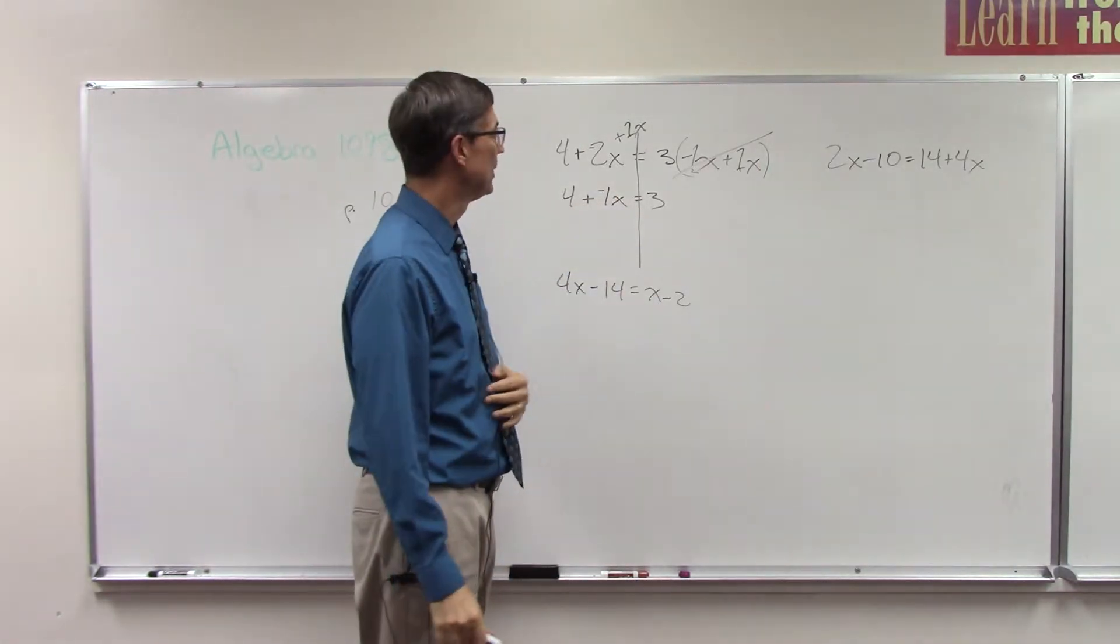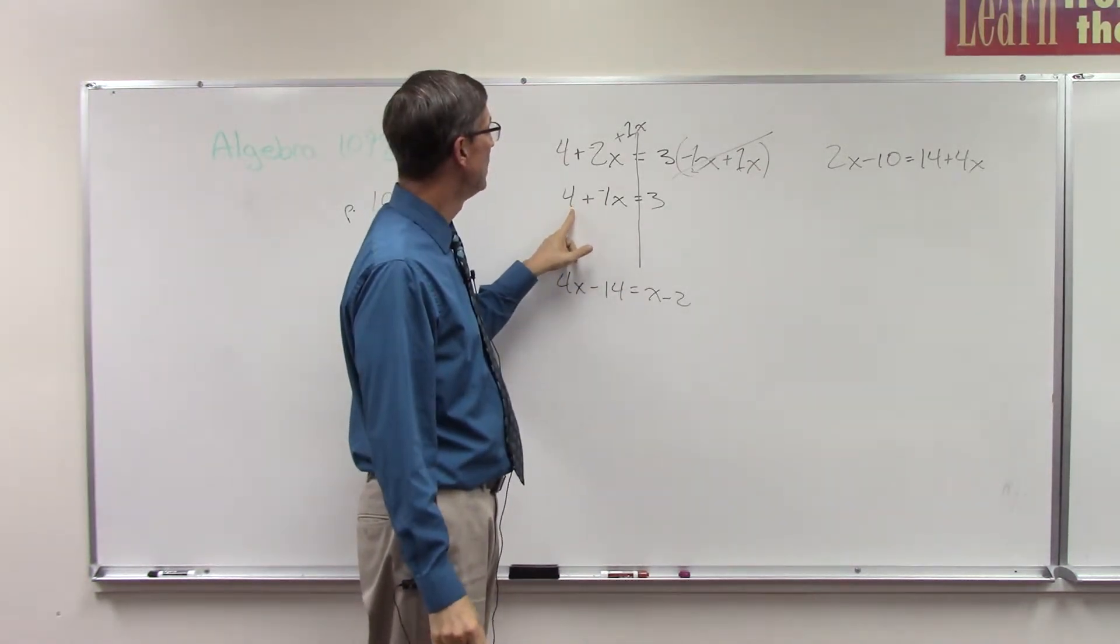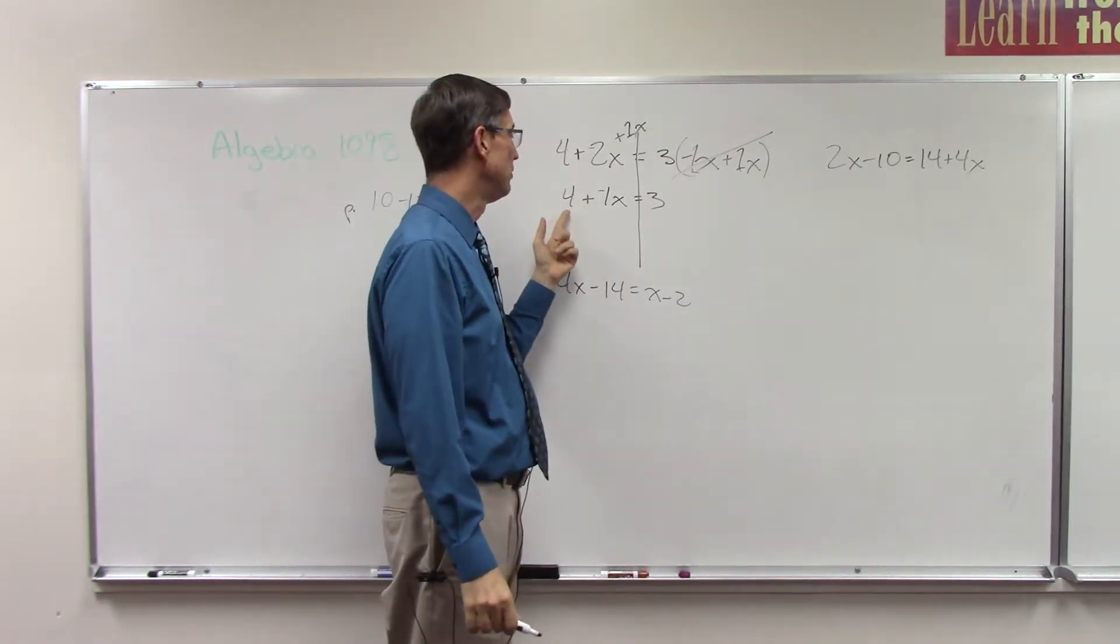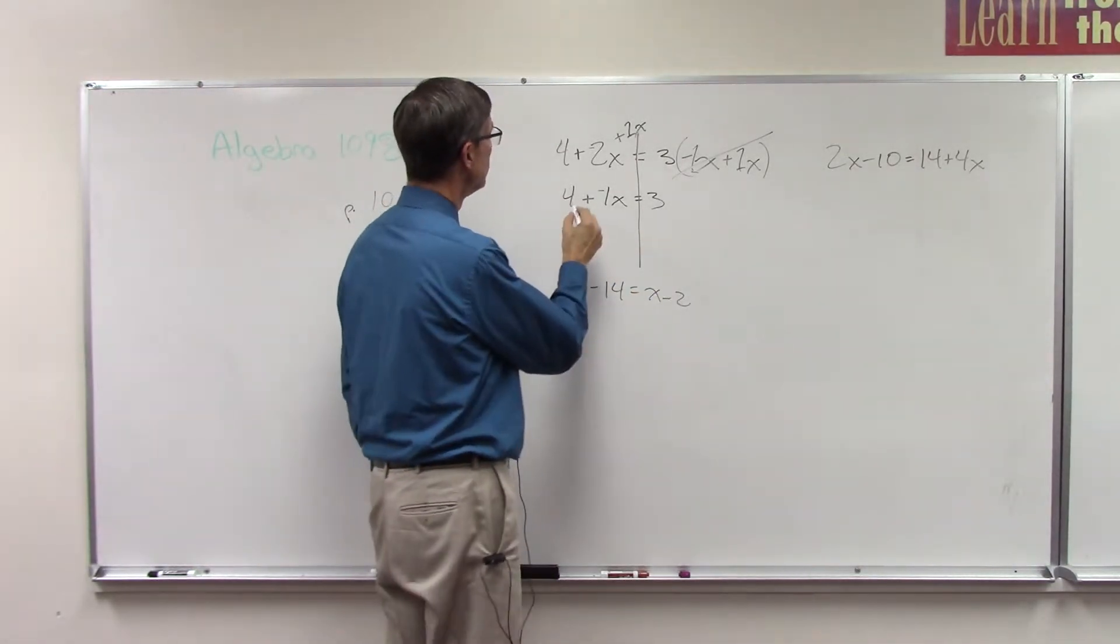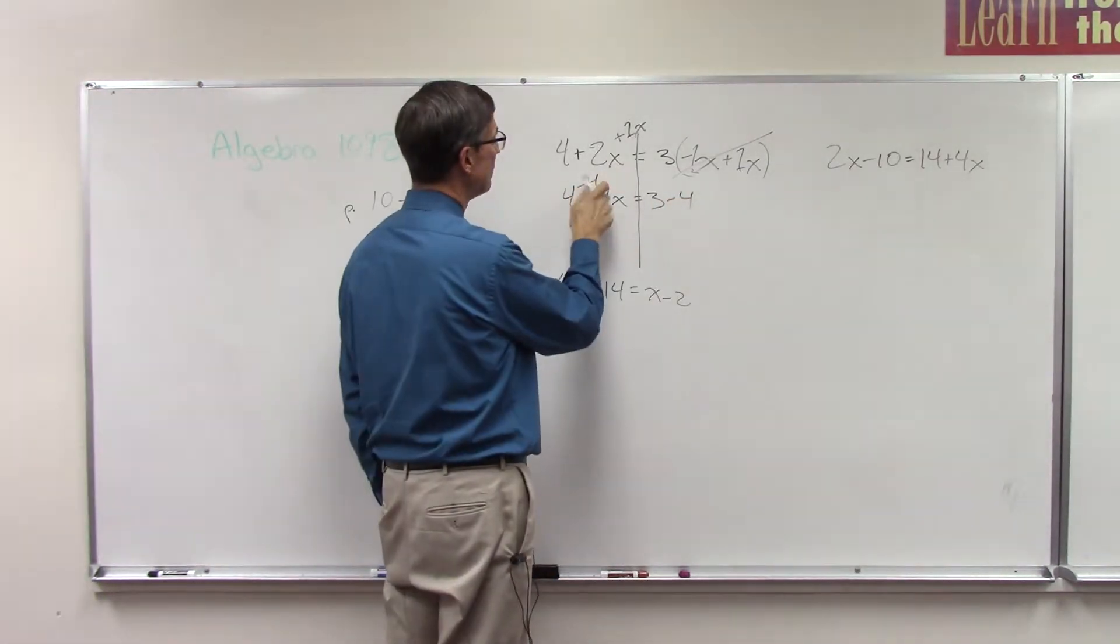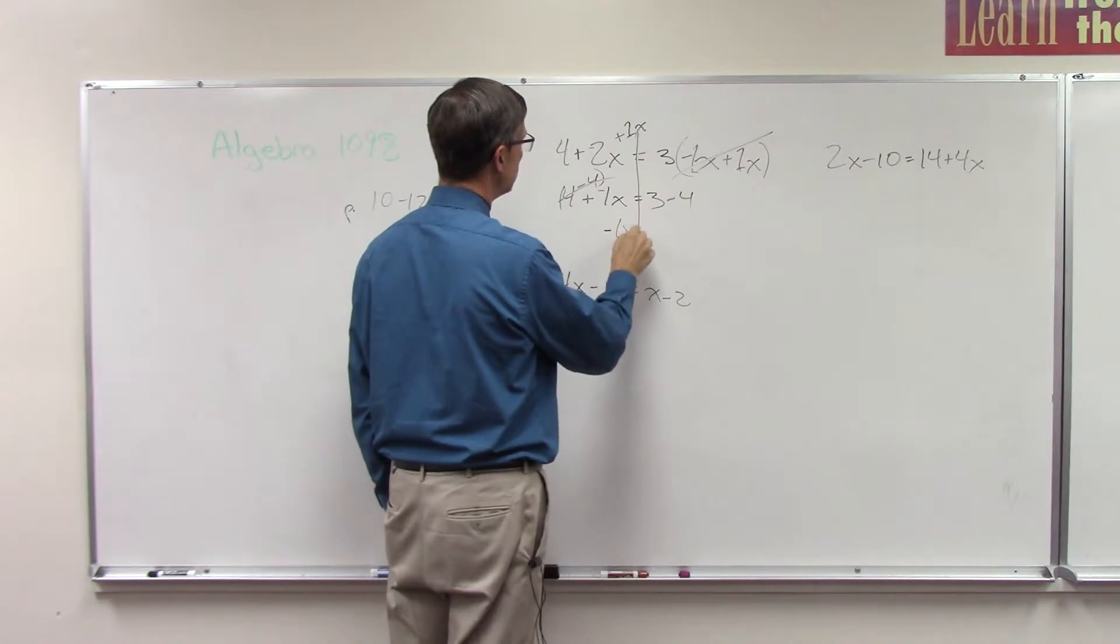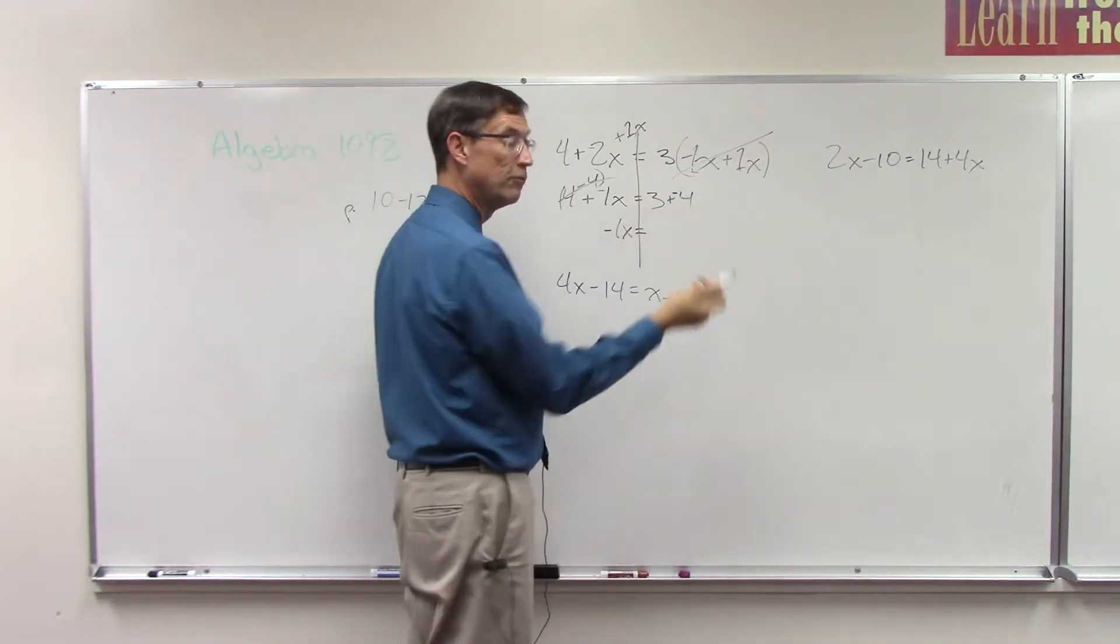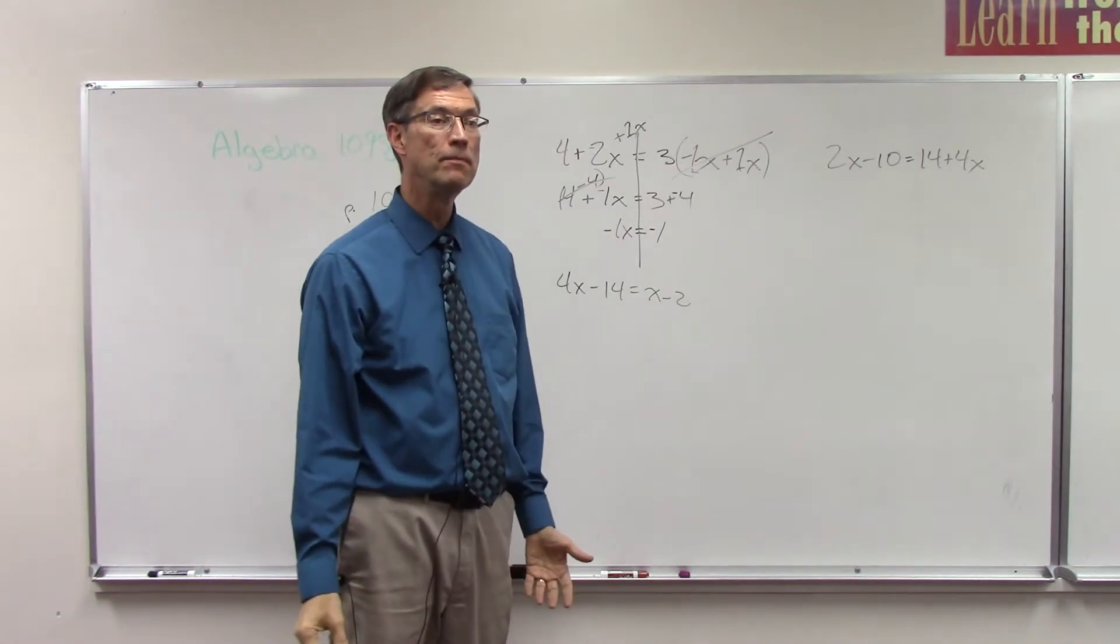So I have the X term on the left—that's what I wanted—but I also want to get rid of the other term on the left. Again, the pace calls this transposing. I want to transpose the 4 from the left-hand side over to the right, so I'm going to subtract 4 from both sides. When I subtract 4 here, that's gone because 4 minus 4 is 0. So I have negative 1X equals 3 minus 4, or 3 plus negative 4. I get negative 1. We're not quite done because